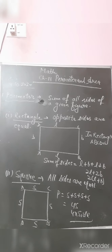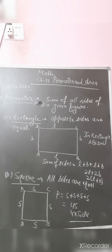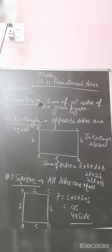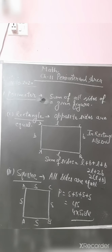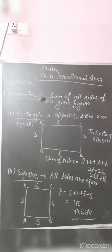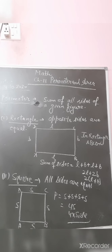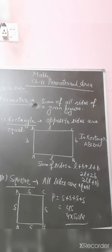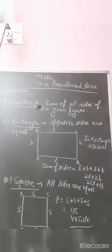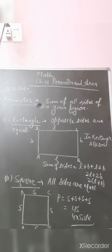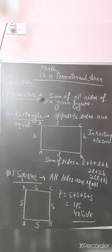Next is the square. The property of a square is that all sides are equal. I have drawn one square ABCD and given all sides the name s because all sides are equal. To calculate the perimeter, sum of all sides: s + s + s + s. That is 4s, because there are four sides. So the formula to calculate the perimeter of a square is 4 × side. In rectangle it is 2(l + b), and in square it is 4 × side.